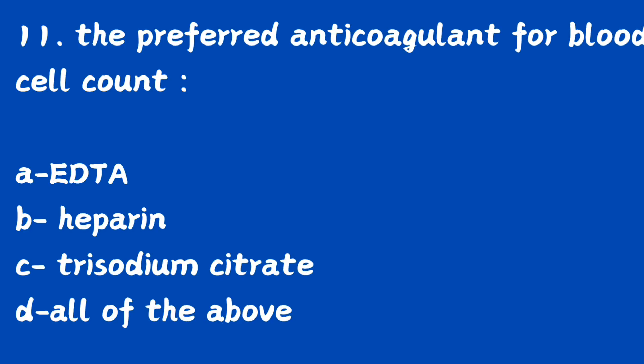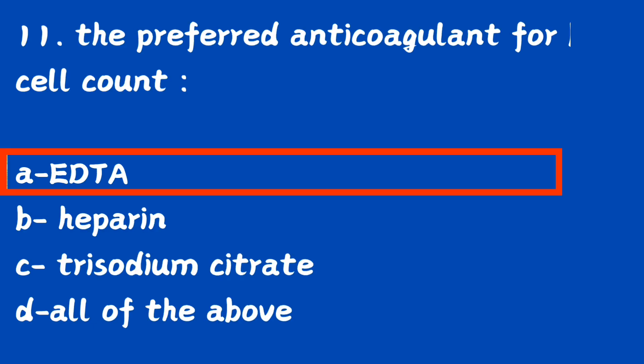Question number 11. The preferred anticoagulant for blood cell count: option A, EDTA; option B, heparin; option C, trisodium citrate; option D, all of the above. Which anticoagulant is preferred for blood cell count? The right answer is option A, EDTA.